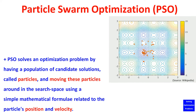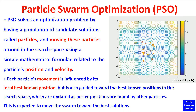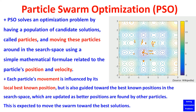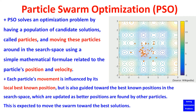Here are some basic working principles of Particle Swarm Optimization. PSO solves an optimization problem by having a population of candidate solutions called particles and moving these particles around in the search space using a simple mathematical formula related to each particle's position and velocity. Each particle's movement is influenced by its local best-known position, but is also guided toward the best-known positions in the search space, which are updated as better positions are found by other particles. This is expected to move the swarm toward the best solutions, as illustrated by the simulation.